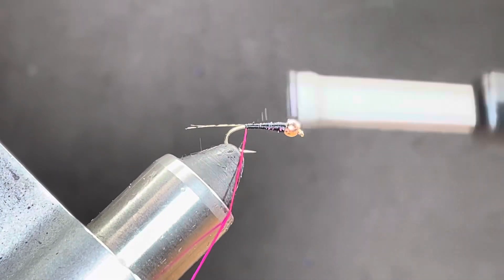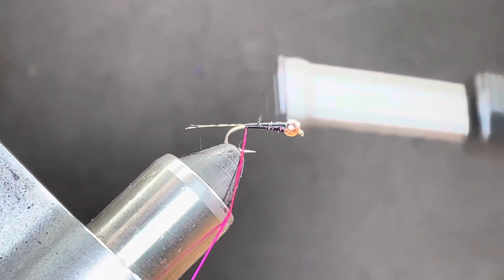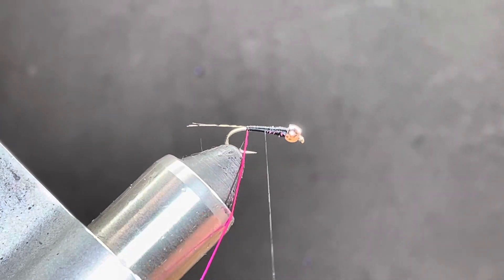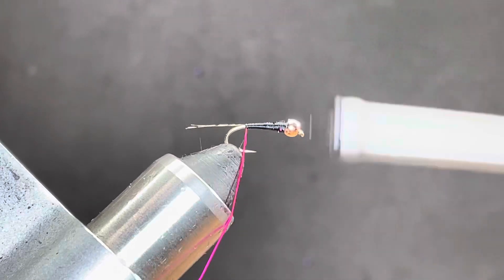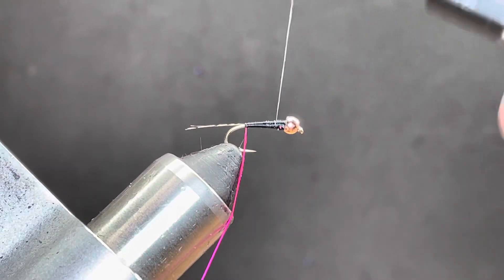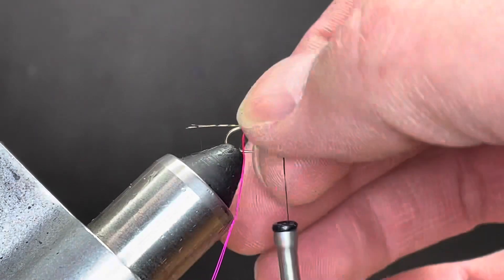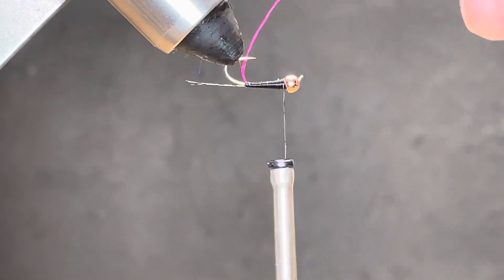Now, for coming back forward, I'm just going to really take my time and just place each thread wrap to kind of finish off this tapered cone shape. If you have any minor lumps or bumps, you can address that with some UV resin.